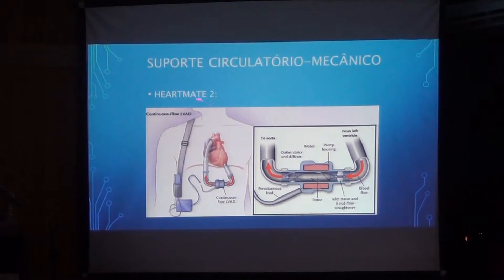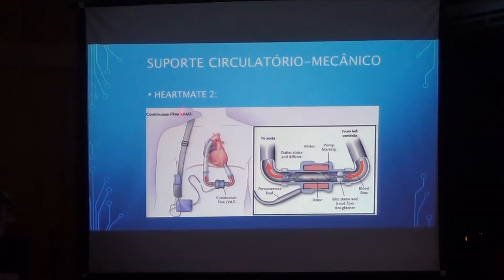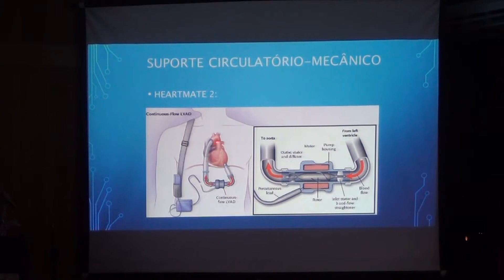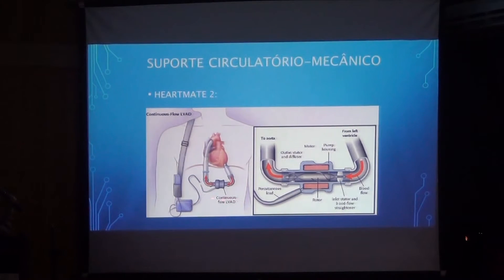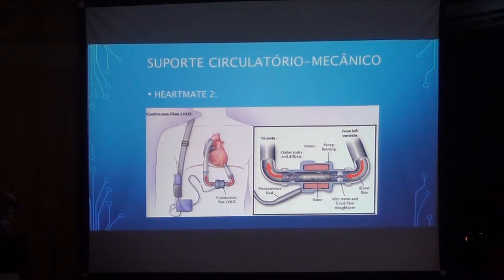For long-duration devices, we have the HeartMate II, Berlin Heart, and HeartWare. The HeartMate II is an axial pump that cannulates the left ventricle, takes the flow through the pump, and returns it to the aorta. This device is totally implanted — it stays inside the patient's chest — with only the driveline externalizing. The patient remains connected to batteries and the equipment that controls the flow.